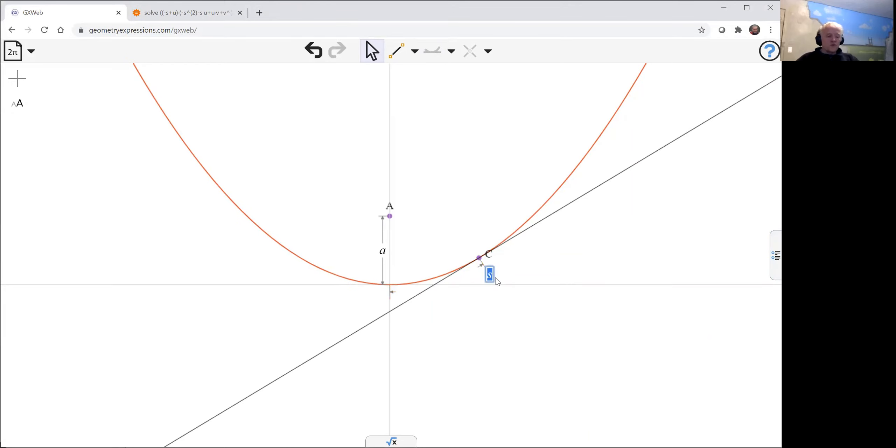Instead of s, I'll use u. And to create the normal, we select the point and the line and use the perpendicular tool here. So there's one normal.